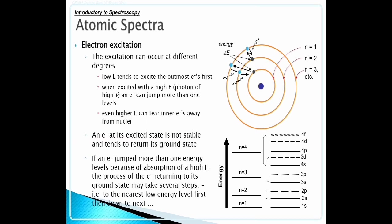Electron excitation. The excitation can occur at different degrees. Low energy tends to excite the outermost electrons first. When excited with a high energy photon of high frequency, an electron can jump more than one level.